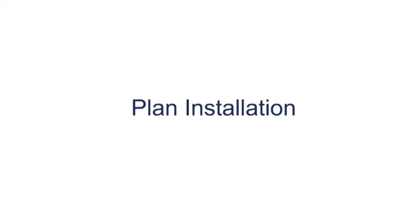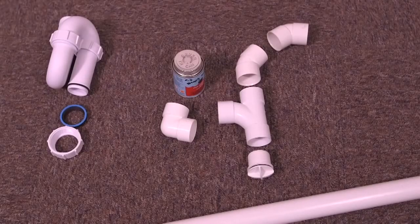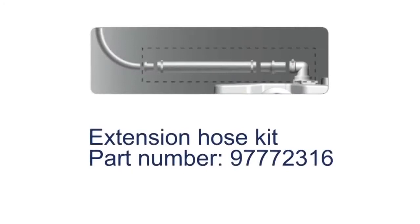When planning the installation, make sure you have all the necessary pipes, connections and tools ready. Identify where the soil stack that you should connect to is located. If the Solo Lift 2 is a replacement for an existing product where the outlet to the soil stack is already installed but on the other side of the outlet to the Solo Lift 2, then the extension hose kit, part number 97772316 will be required.